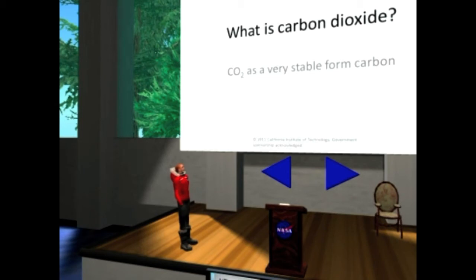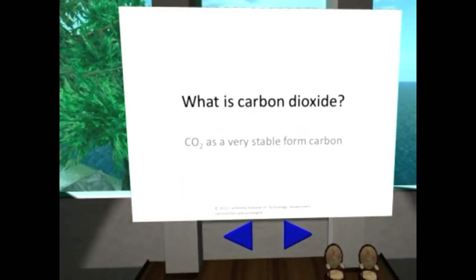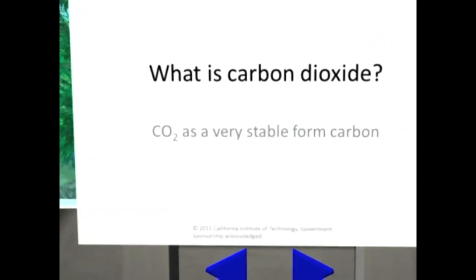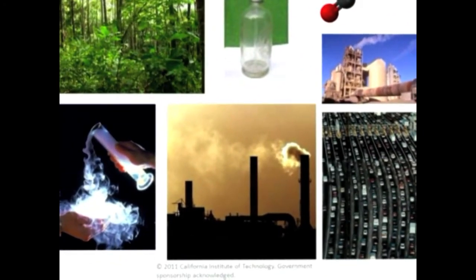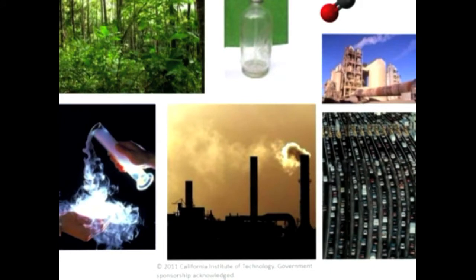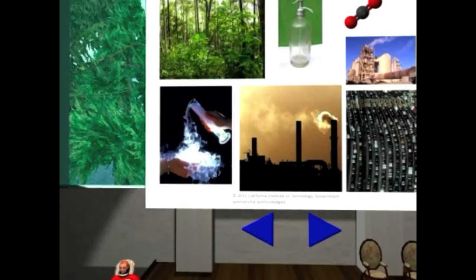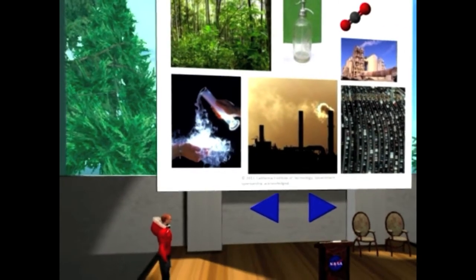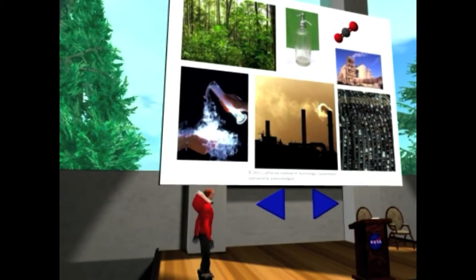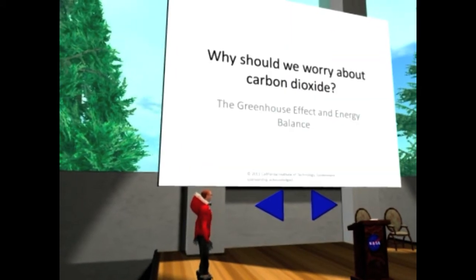So carbon dioxide — what is it? It's about the most stable form of carbon in the system. It's a highly oxidized state and it's part of everyday life. And in this next chart, you can see a picture of where it plays a role everywhere. It's so central to our lives that it's actually difficult to imagine how we can stop — A, producing it, or B, using it in everything we do.